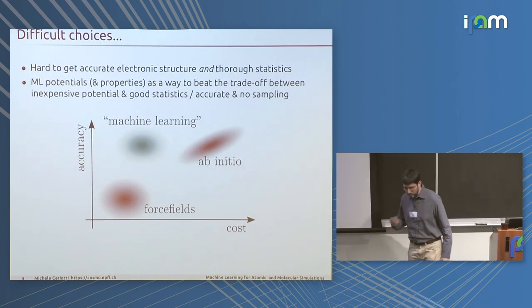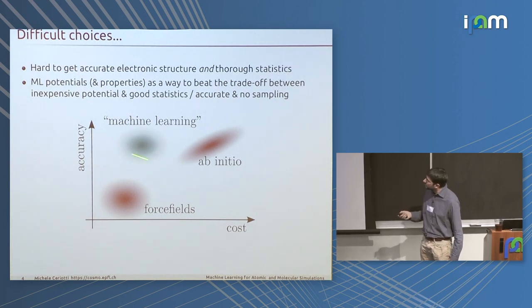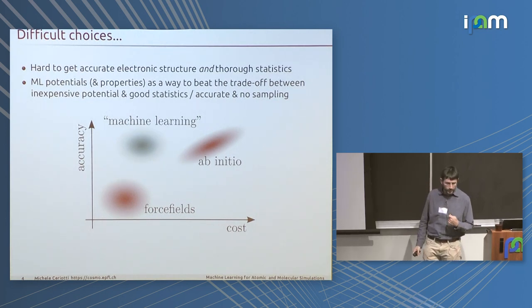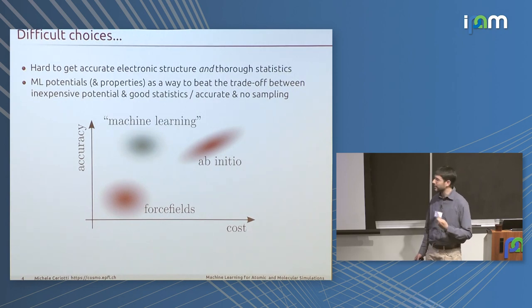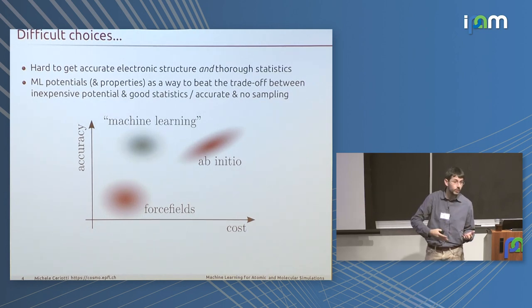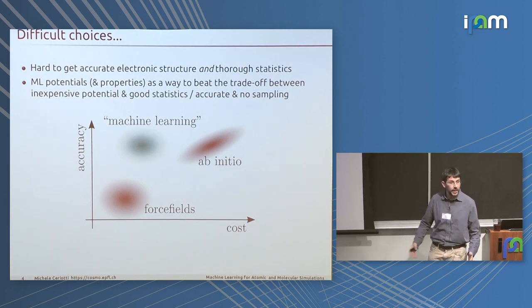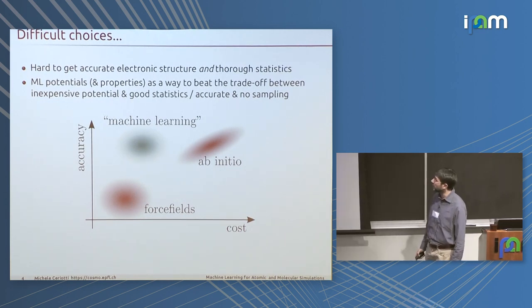Anyone who has done atomistic simulations has experienced the frustration of finding a compromise between the accuracy of evaluating your properties and the accuracy of sampling that translates into the accuracy of the thermodynamics. I got into the machine learning business because I really believe it can be the silver bullet to get the best of both worlds: the accuracy of first-principles evaluation of individual configurations, and still the possibility of computing energies, forces, and properties millions of times for proper thermodynamics.